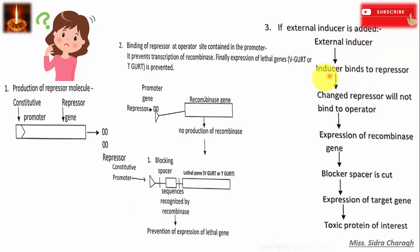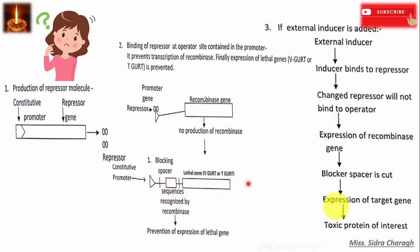Next, if an external inducer is added, the external inducer will bind to the repressor and change it. The changed repressor will not bind to the operator region, and the expression of the recombinase gene will occur. The recombinase gene then cuts out the blocker spacer, expression of the target gene takes place, resulting in production of a toxic protein, which kills the embryo of the seed.